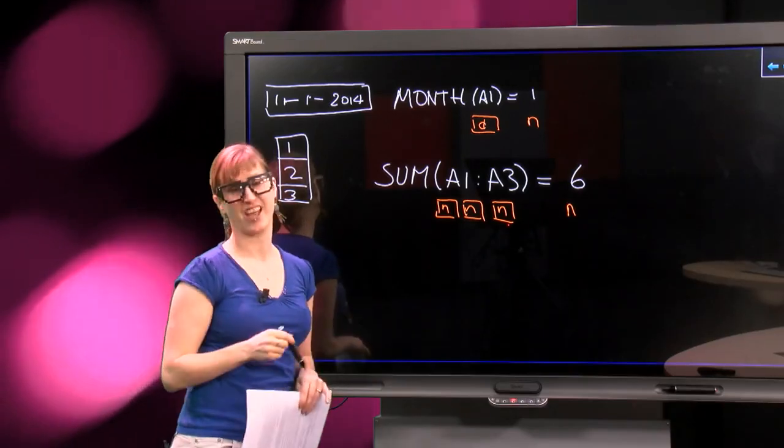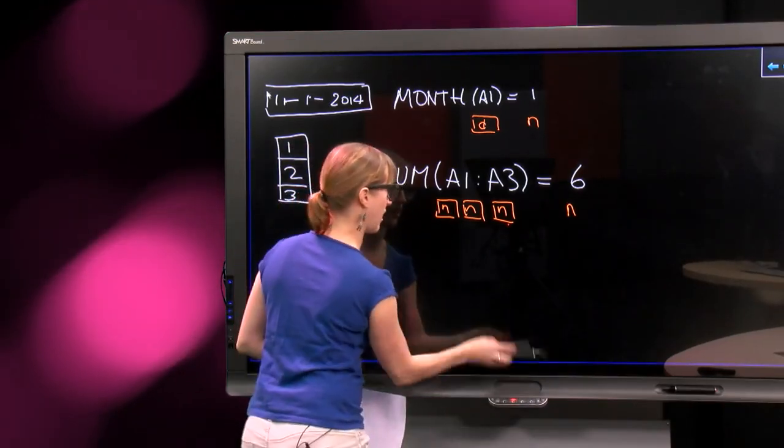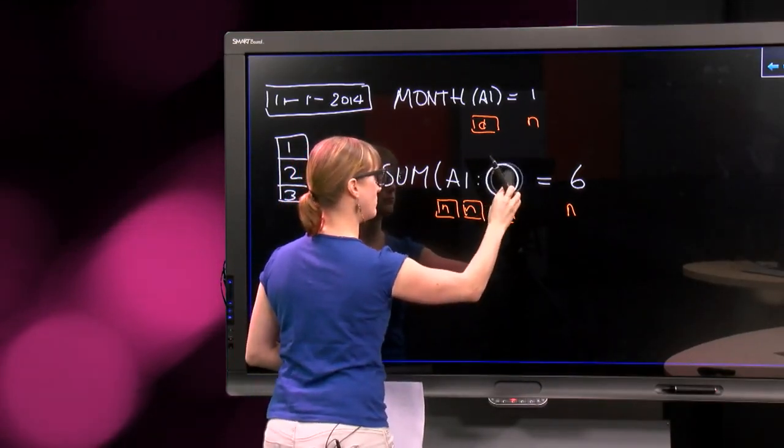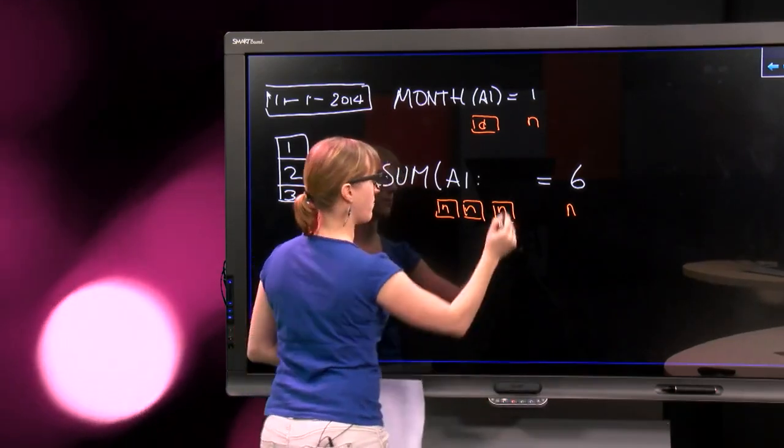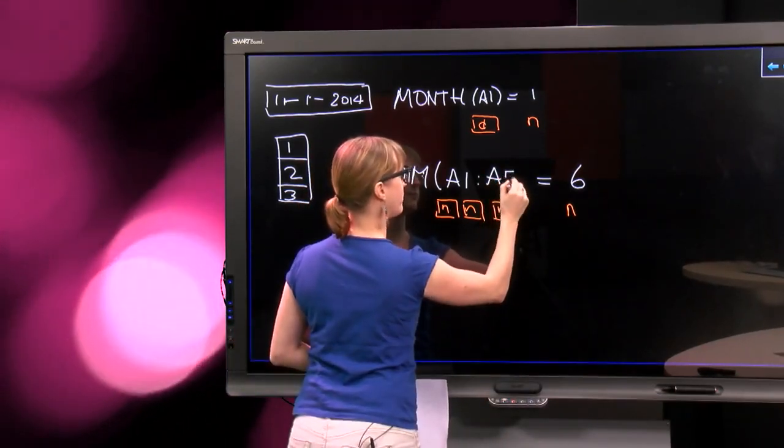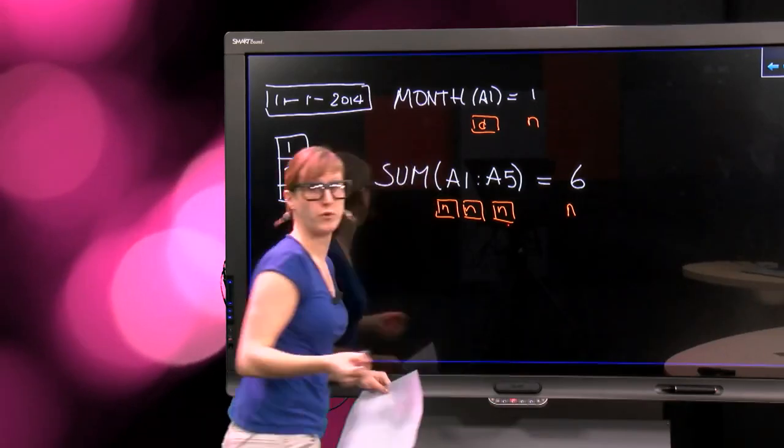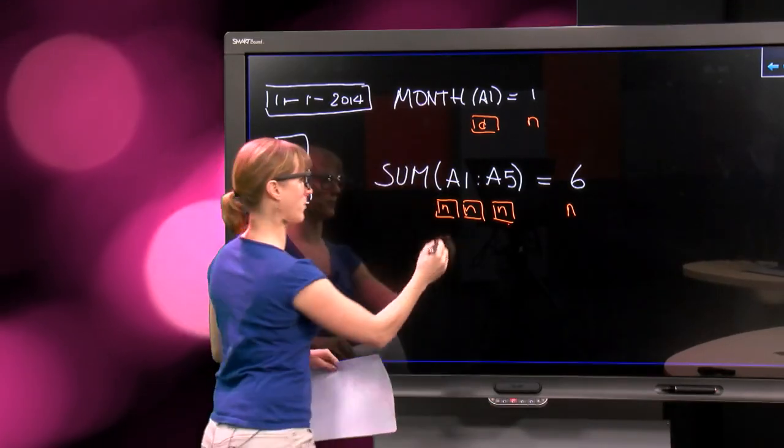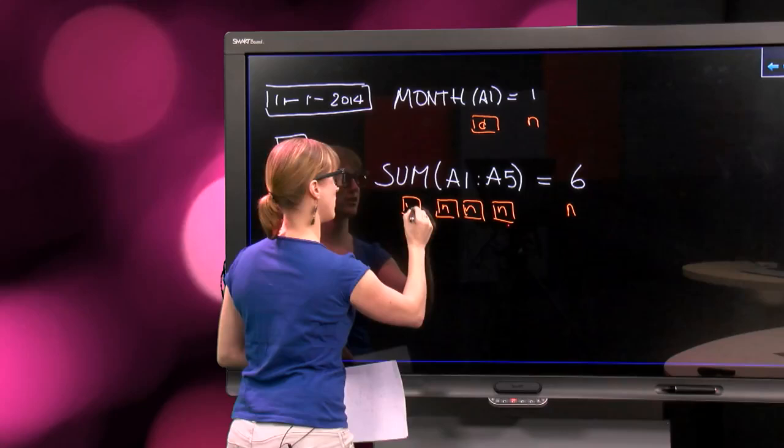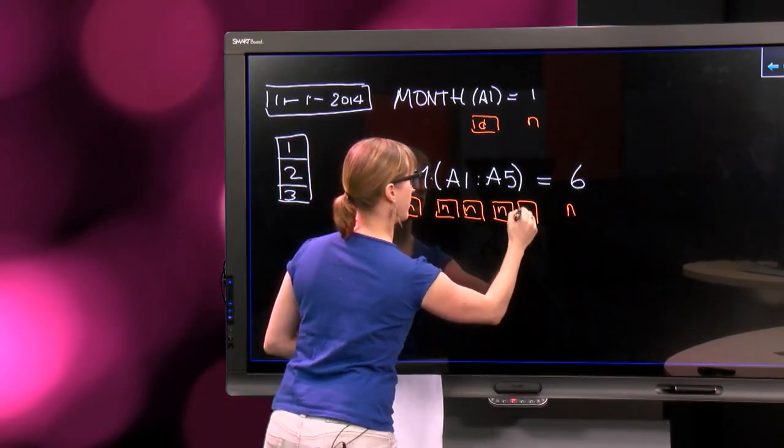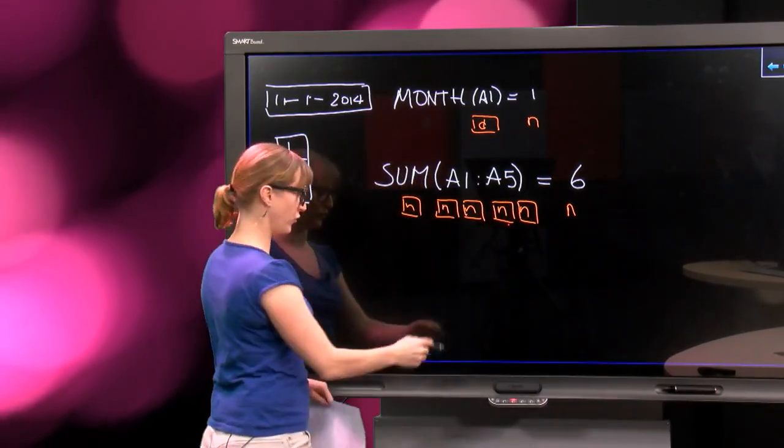But, of course it doesn't necessarily have to be 3, we can also say, now we're summing until A5. Would that give the function a different type? We would have to add another container here, and one here. So we are not going to do that, this is not the way that we are going to write this down.